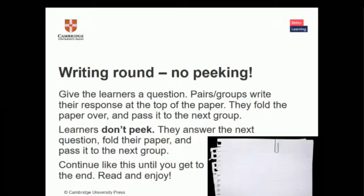Let's go to the next activity. I'm calling this a Writing Round — no peeking — but some of you might know this as a game called Consequences. You give learners a question, for example, 'Who was the man?' They write the response at the top of the paper — for example, 'The man was a wizard' or 'The man was a very intelligent businessman.' Then they fold the paper over so their sentence can't be seen and pass it to the next group or the next learner.